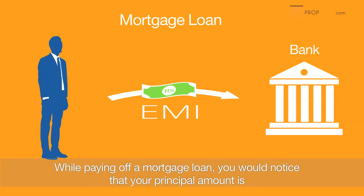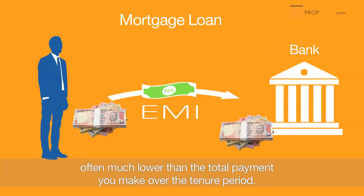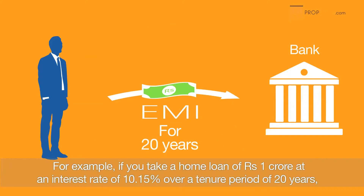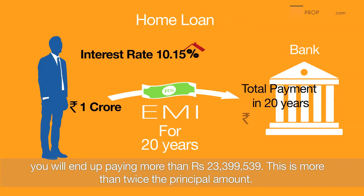While paying off a mortgage loan, you would notice that your principal amount is often much lower than the total payment you make over the loan period. For example, if you have a home loan of 1 crore rupees at an interest rate of 10.15% over a tenure period of 20 years, you will end up paying more than 2 crore 33 lakhs — more than twice the principal amount.